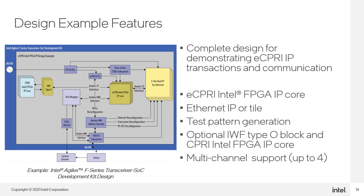Looking at the diagram, let's go over a few features. The ECPRE Intel FPGA IP core is shown in gold. The ETile hard IP for Ethernet to which it connects is shown to its right in yellow. Test pattern generation contained within the test wrapper block is shown in light purple in the middle. The IWF type 0 block is in gold and the CPRE Intel FPGA IP block in turquoise are shown on the left side of the diagram — they are only added if IWF type 0 support is enabled during parameterization. Outside of those, we can see a PTP PLL, an ECPRE IOPLL, and additional subsystems, bridges, and interface logic needed for design example operation.